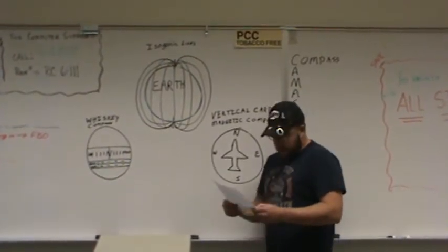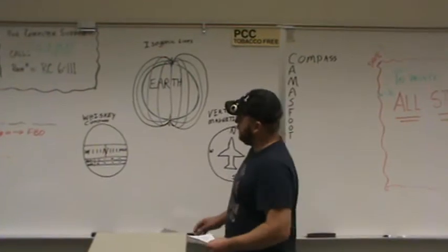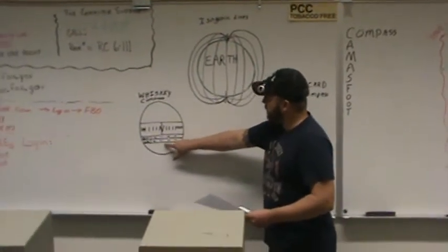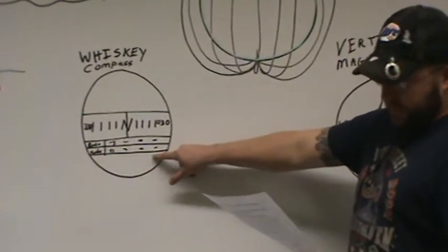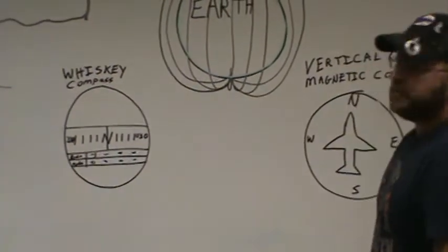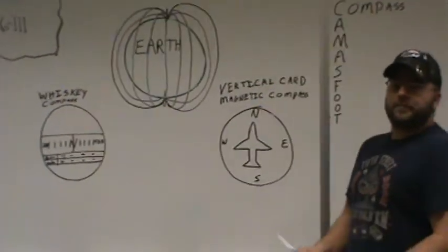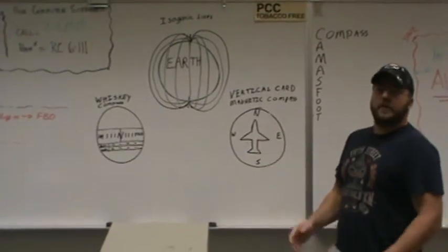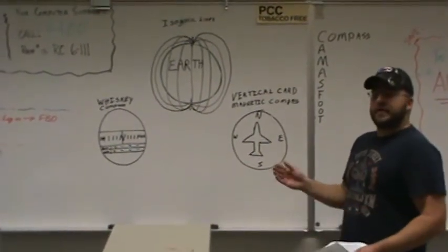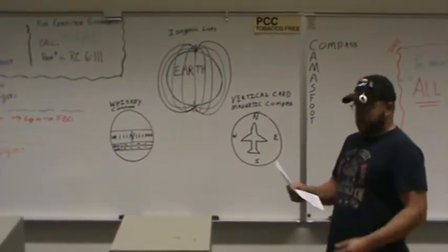And if he cannot, then you must note it here, and this is called the compass correction card. And that way, when you're flying, you know how many degrees off that magnetic compass is, and you can compensate for that.